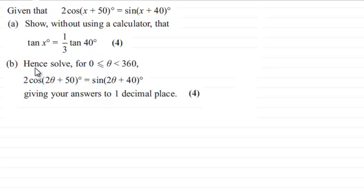Now we're being asked to hence solve for theta being greater than or equal to zero but less than 360, 2 cosine of 2 theta plus 50 degrees equals sine of 2 theta plus 40 degrees, giving your answers to one decimal place for four marks. So if you'd like to have a go at this, I'll just give you a moment to pause the video, and when you come back I'll take you slowly through the method.